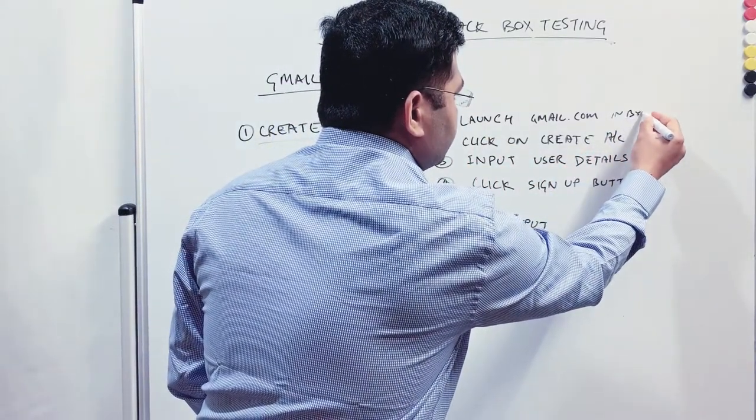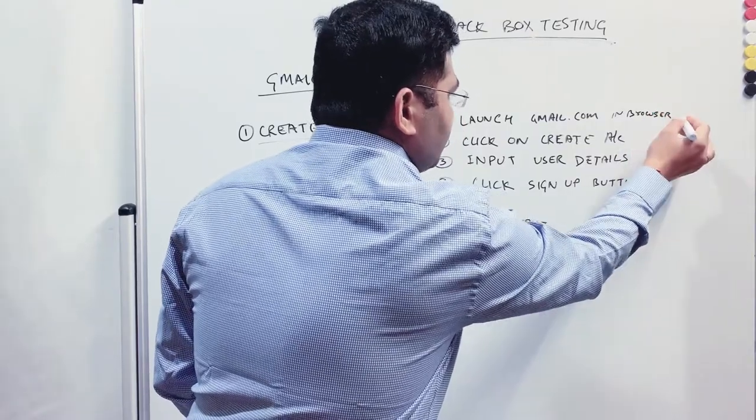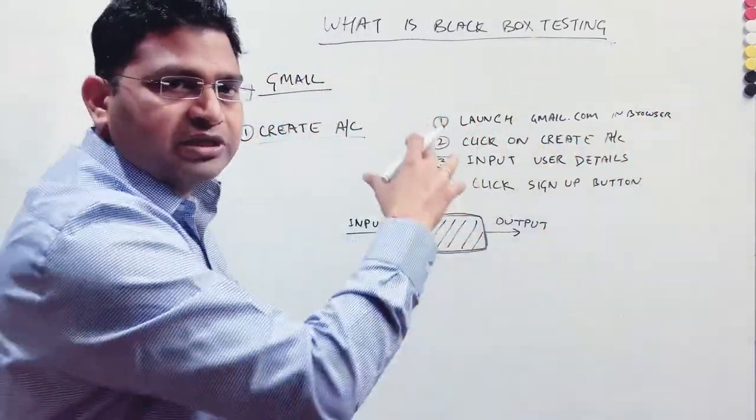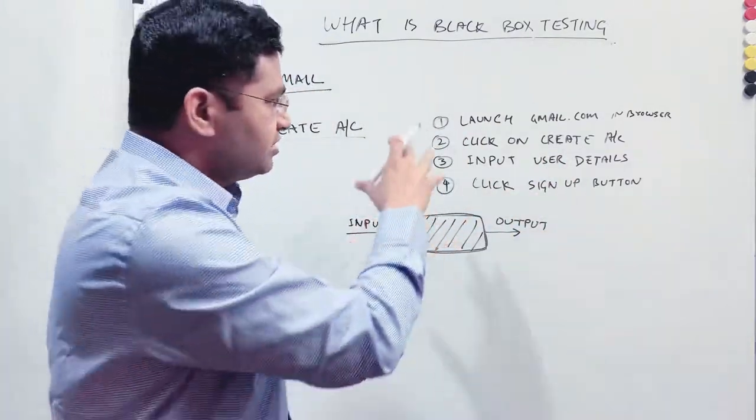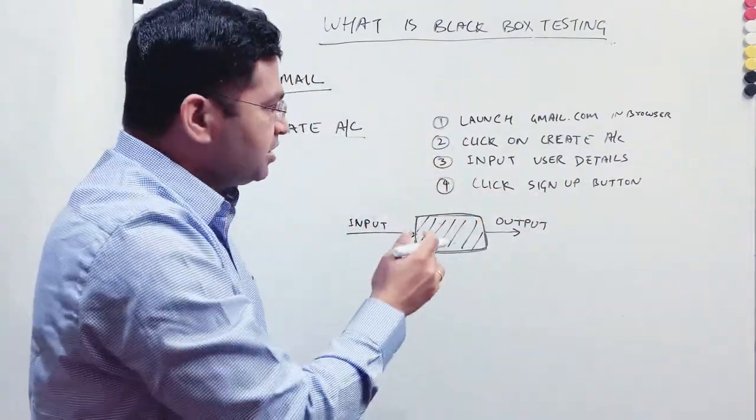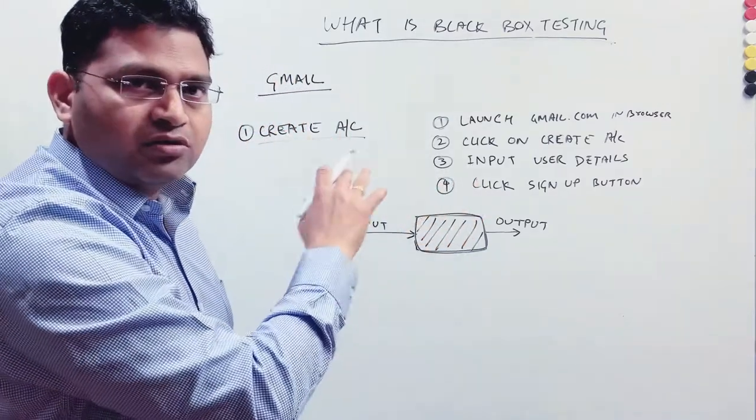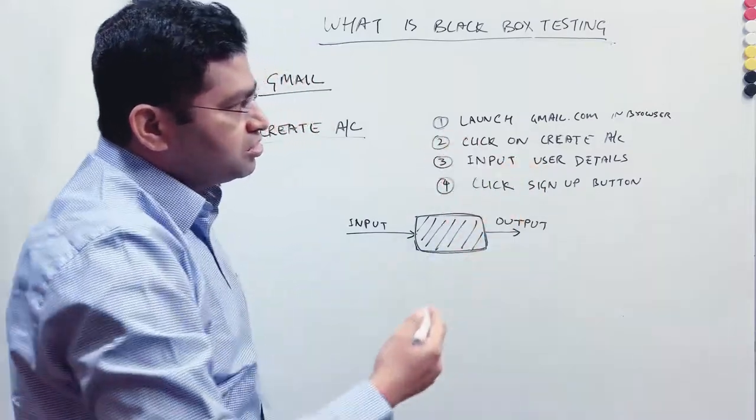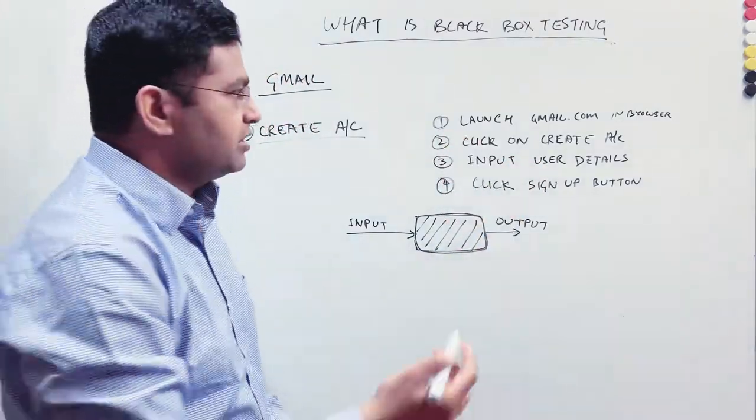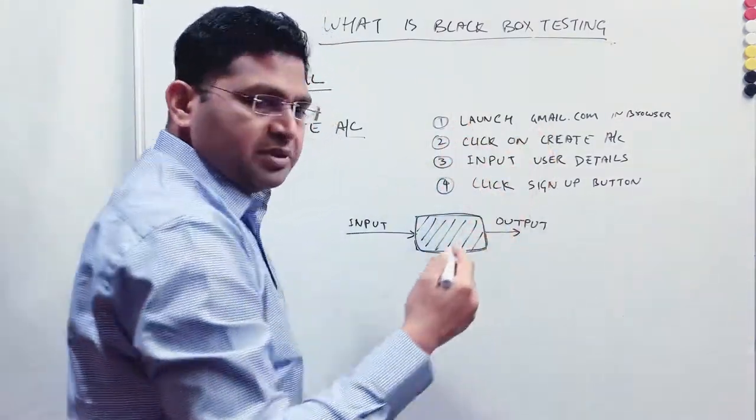In browser, and browser could be like Chrome, Firefox, so that will be specific in the test cases when you detail this out in your test case. This is just to explain you the steps, that is why I have not written all the details in this particular scenario. So first step will be to launch gmail.com in the browser. If the launch is being successful, then I will say output is passed.